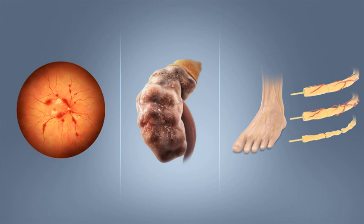All forms of diabetes increase the risk of long-term complications. These typically develop after many years but may be the first symptom in those who have otherwise not received a diagnosis before that time. The major long-term complications relate to damage to blood vessels. Diabetes doubles the risk of cardiovascular disease and about 75% of deaths in diabetics are due to coronary artery disease. Other macrovascular diseases include stroke and peripheral artery disease. The primary complications of diabetes due to damage in small blood vessels include damage to the eyes, kidneys, and nerves.